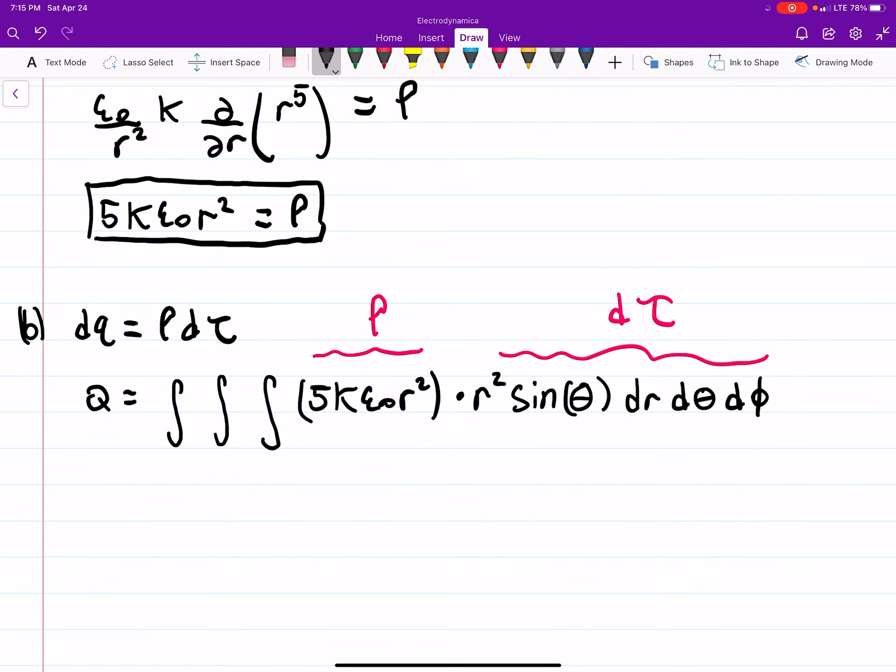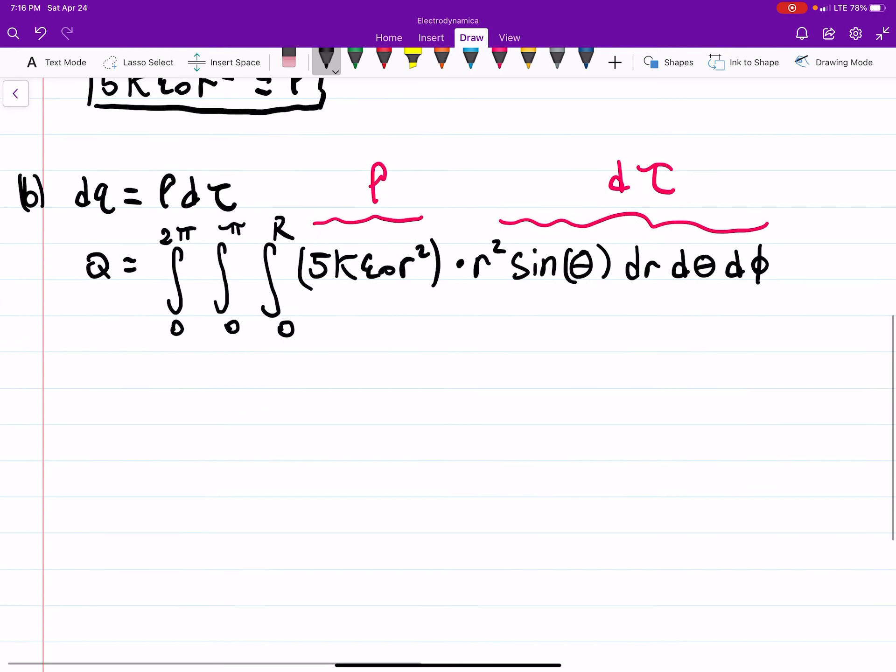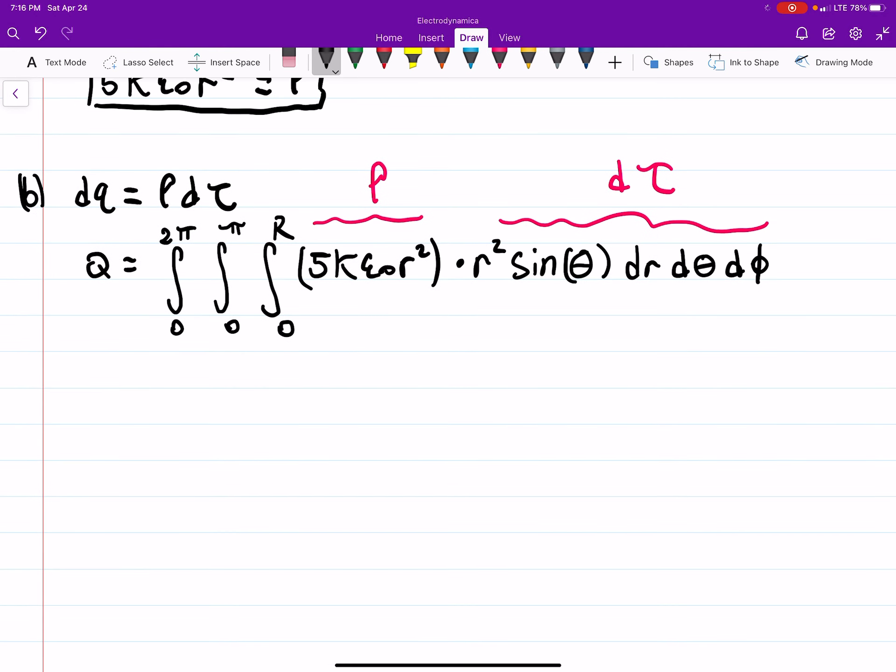So what are our limits of integration? For r, we'll go from 0 to r. For theta, we go 0 to pi. And for phi, we go 0 to 2 pi. I'm pretty sure I've shown that before, the triple integral in spherical coordinates and why the bounds are what they are.